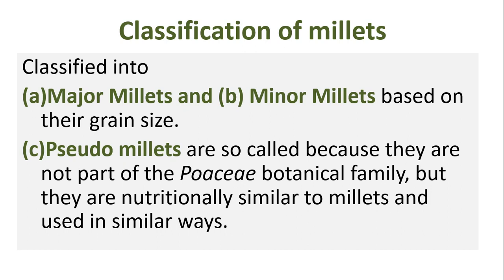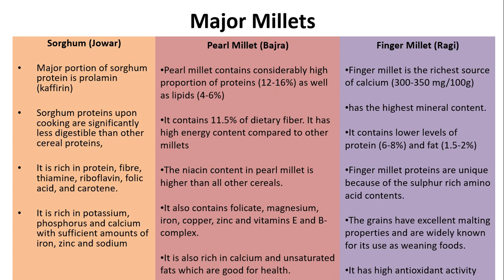Classification of millets: millets are classified into major millets and minor millets based on grain size, and there are also pseudo millets. Pseudo millets are so called because they are not part of the Poaceae botanical family but are nutritionally equivalent to millets. Major millets include sorghum (Javar), pearl millet (Bajra), and finger millet (Ragi). The major portion of sorghum protein is prolamine (kafirin). Pearl millet contains considerably high protein (12–16%) and lipids (4–6%). Finger millet is the richest source of calcium.